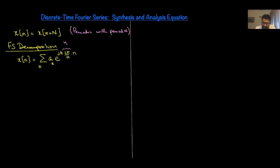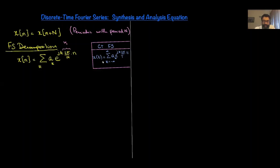To compare with the continuous-time case, let's put things in perspective. The continuous-time Fourier series representation has period T and consists of a summation running from minus infinity to plus infinity. This raises the question: should the same hold for the discrete-time case? In other words, what should the limits of this summation be — should it go from minus infinity to plus infinity, or something else? I suggest you pause the video and think about this before moving forward.